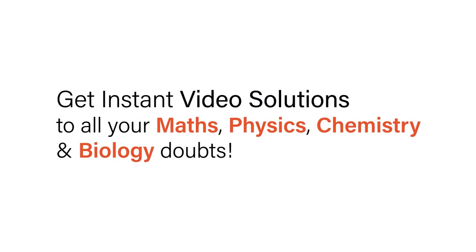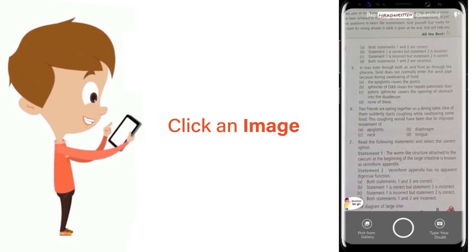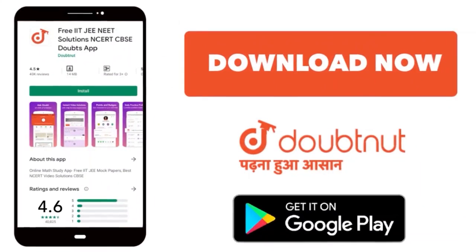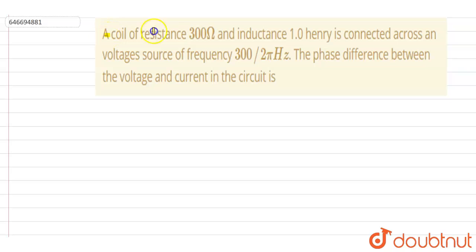With Doubtnet, get instant video solutions to all your maths, physics, chemistry and biology doubts. Just click the image of the question, crop the question and get instant video solution. Download Doubtnet app today. Hello everyone, a coil of resistance 300 ohm and inductance 1 henry is connected across a voltage source of frequency 300 by 2 pi hertz.